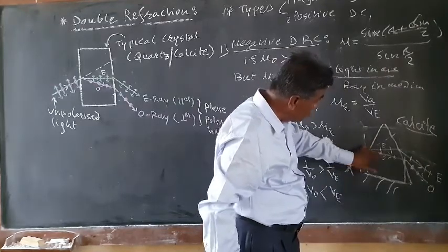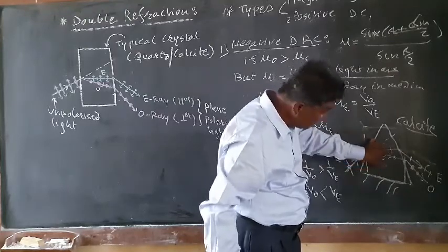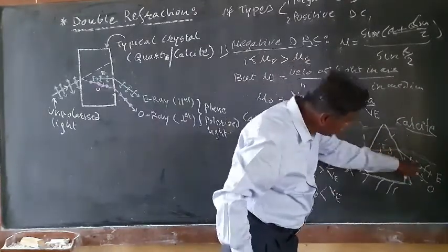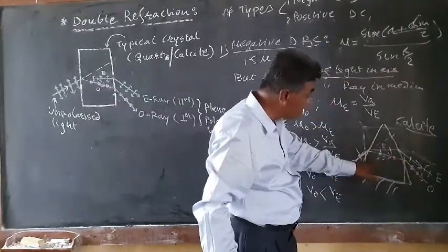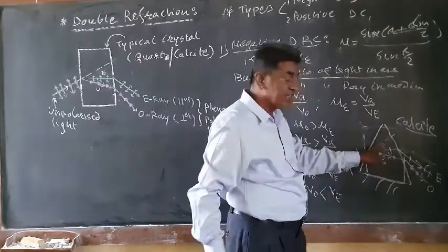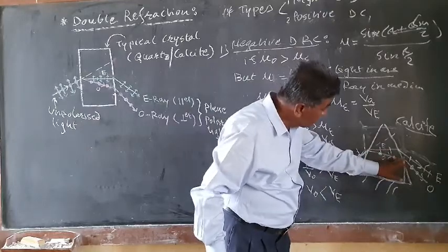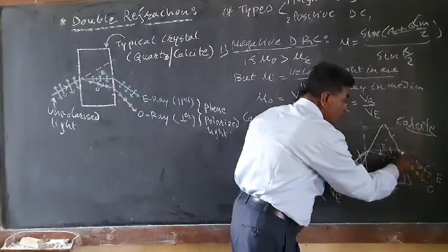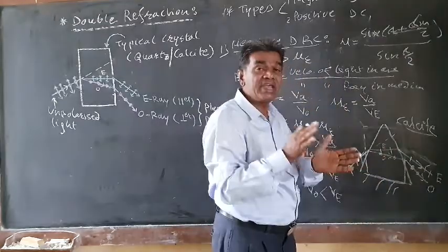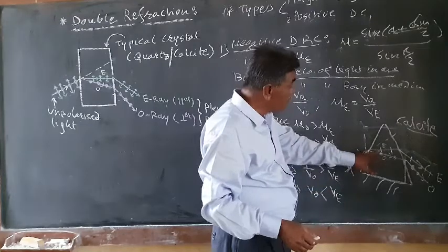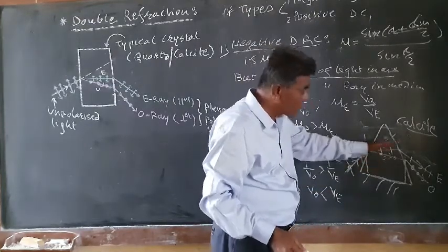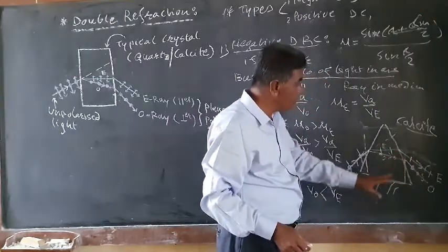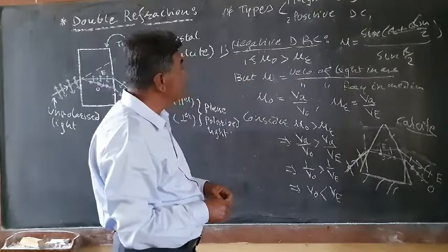When unpolarized light is incident on the crystal, this point acts as a source of two rays — the O-ray and the E-ray — which travel through the crystal with different velocities. Since the velocity of the O-ray is less than the velocity of the E-ray in a negative crystal, the E-ray travels faster and exits the crystal first, followed by the O-ray. This is the behavior of a negative double refracting crystal like calcite.